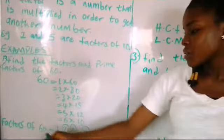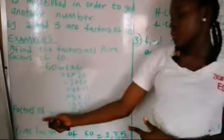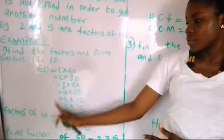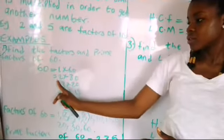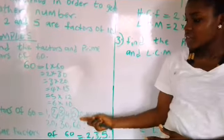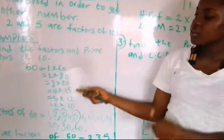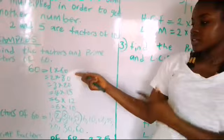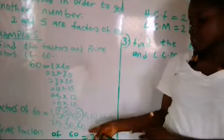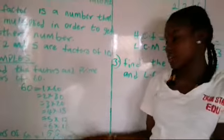Now we are going to arrange them from the lowest to the highest. The factors of 60 are: starting from 1, 2, 3, 4, 5, 6 — we arrange them first — then 12, 15, 20, 30, 60. Those are the factors of 60, arranged from the lowest to the highest.